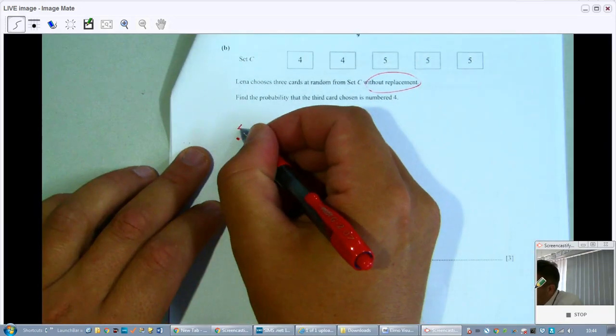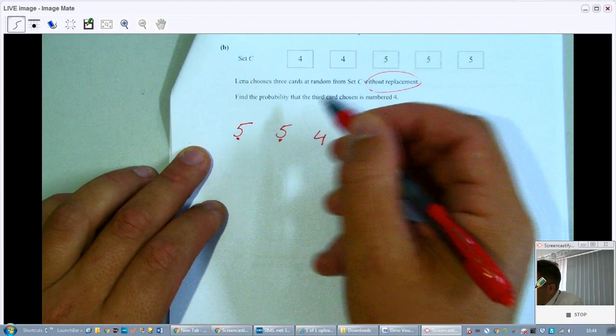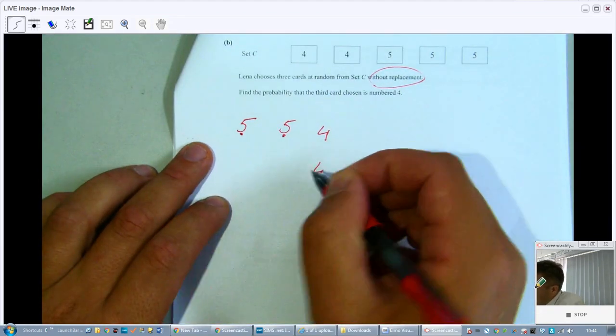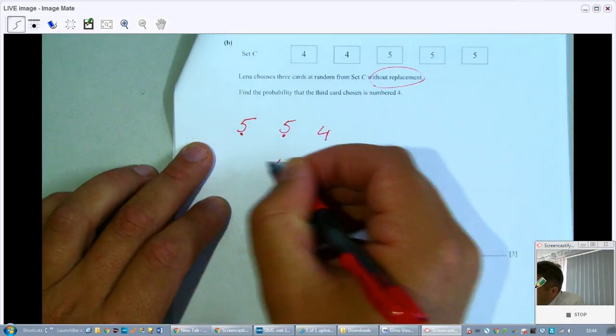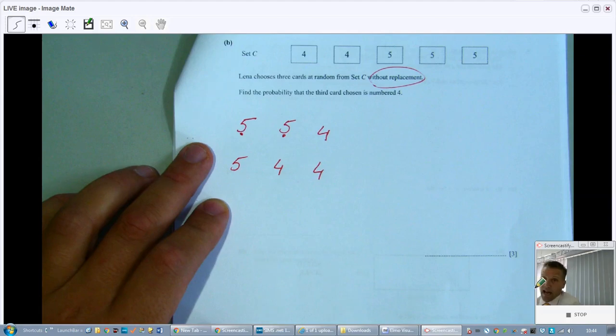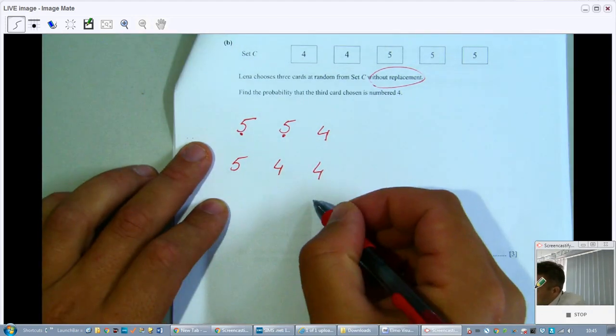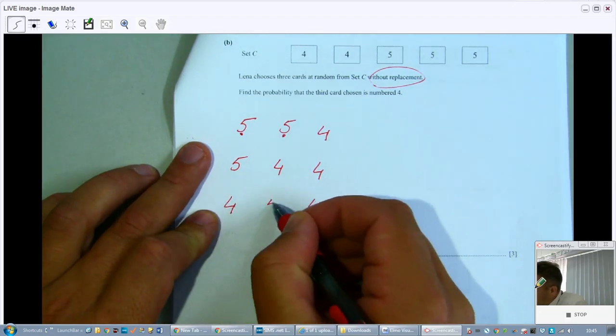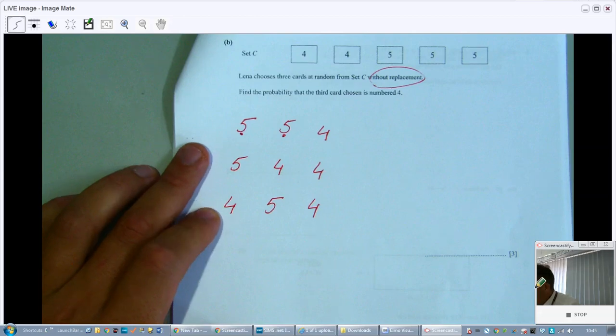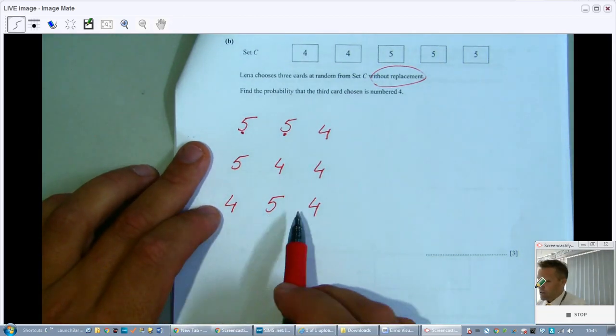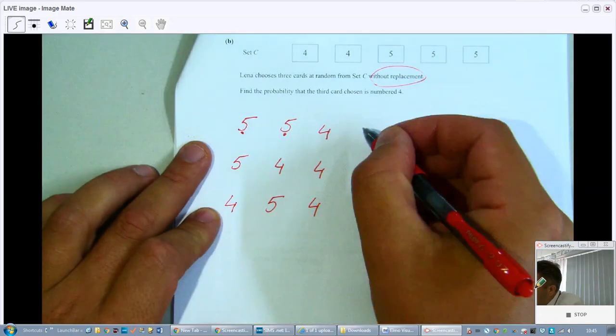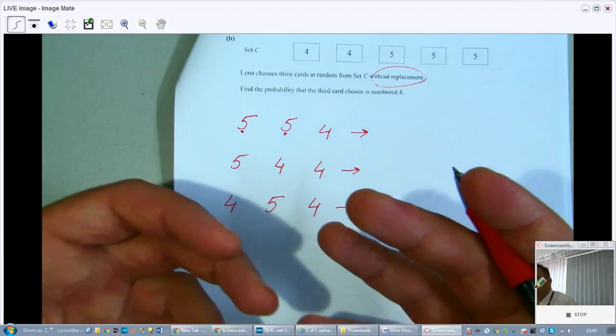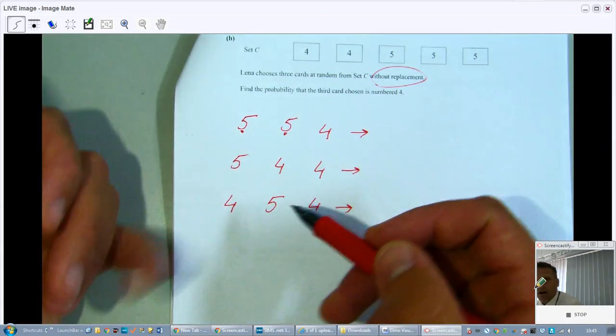I could get a 5 and a 5 and a 4. That would be good. I could also get a 5 and a 4 and a 4, as long as that last one is a 4. I could also get, let me see if I switch those around, a 4 and a 5 and then a 4. I can't get a 4, a 4, and a 4 because there are only two 4s there. I think these are the possibilities.